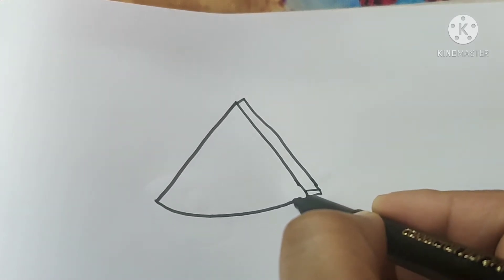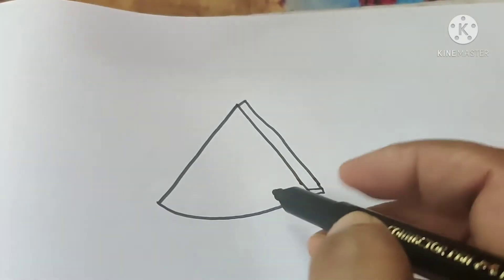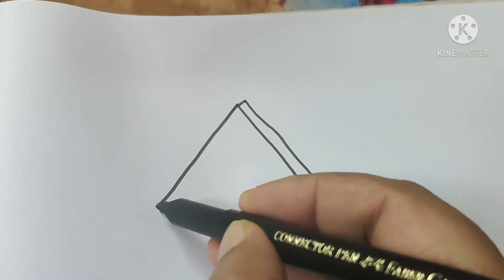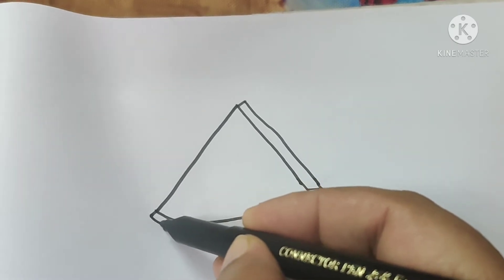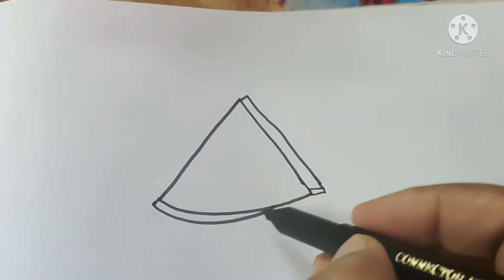Now we will make a curved line like this. Now make two small curved lines like this.